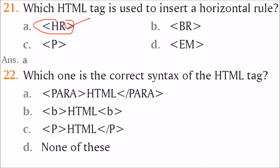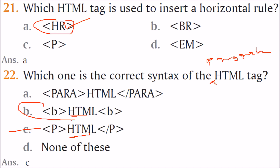Which one is the correct syntax of the HTML tag? One option makes text bold, another makes a paragraph. For the paragraph tag, the answer is C — there must be a forward slash in the closing tag.